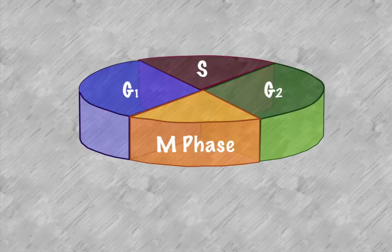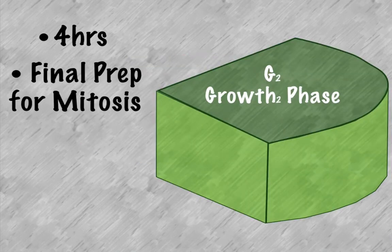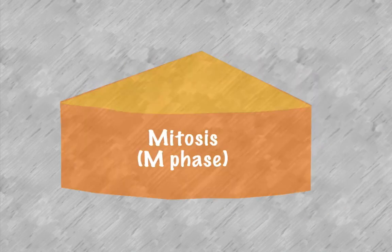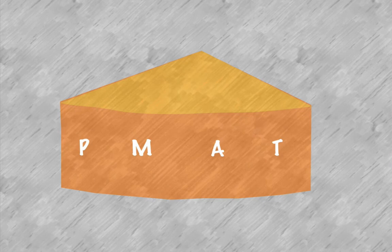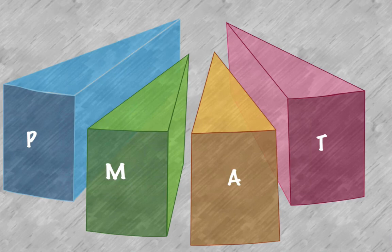Then we have our growth two phase. This phase takes about four hours. This is the final preparation for mitosis. Mitosis, the M phase, can be broken down into four different mini phases: PMAT.